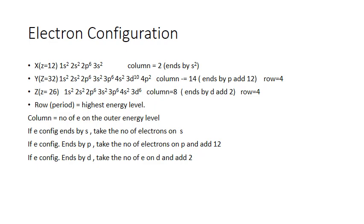Atoms are arranged in the periodic table in different rows and columns. The periodic table has seven rows and is formed of 18 columns. Atoms are arranged in increasing order of their atomic number. To know the correct position of any atom in the periodic table, we must first write its electron configuration, which depends on the number of electrons, equal to the atomic number Z.